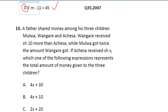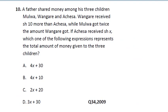Now the last question we are going to be solving for algebra. It says the father shared money among his three children. Wangare received 10 shillings more than Achesa, while Mulwa got twice the amount Wangare got. If Achesa received sh x, which one of the following expressions represents the total amount of money given to the three children?